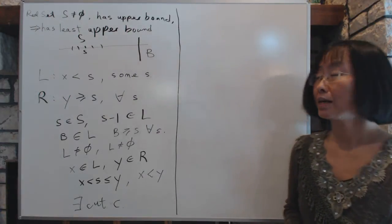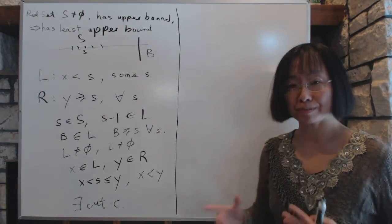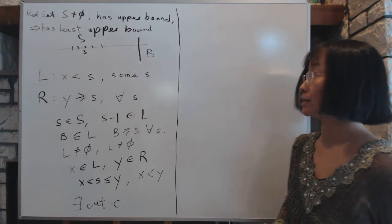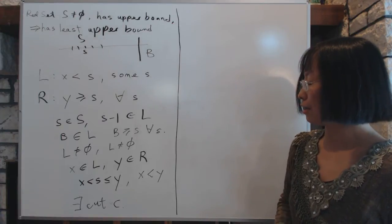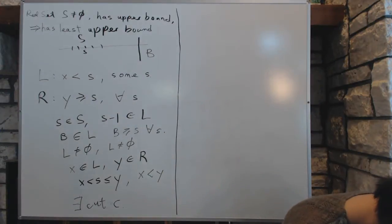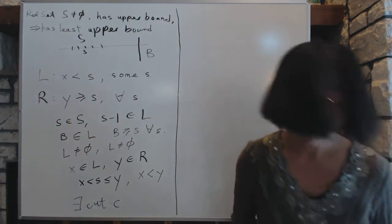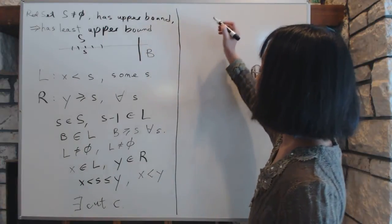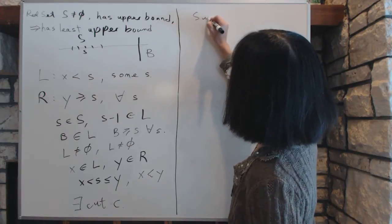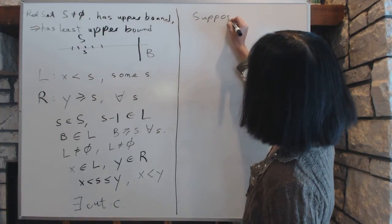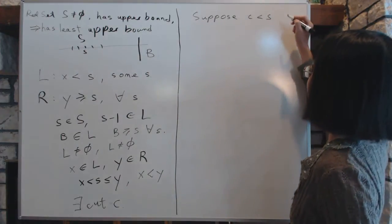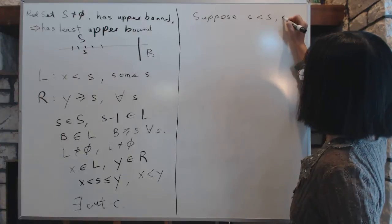This cut number will be an upper bound, but more importantly it will be the least upper bound, which is what we're looking for. First, we will show that it is an upper bound. To show it's an upper bound, suppose — by contradiction — that c is less than s for some s, so that it's not an upper bound.